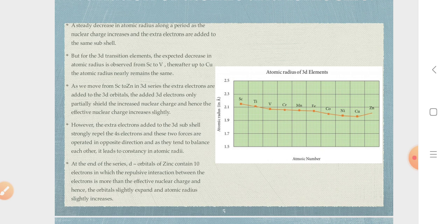At the level, effective nuclear charge increases. However, the extra electrons added to the 3D subshell strongly repel the 4S electrons, and these two forces are operated in opposite directions, forcing in opposite directions, balancing each other.